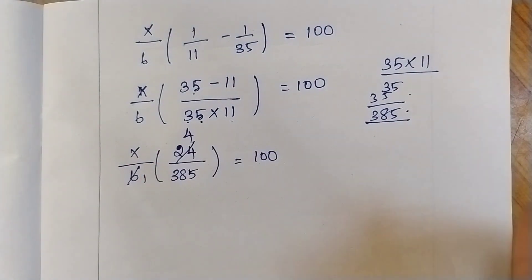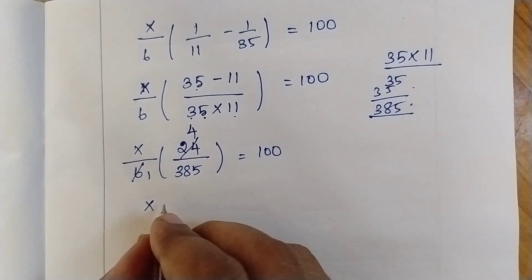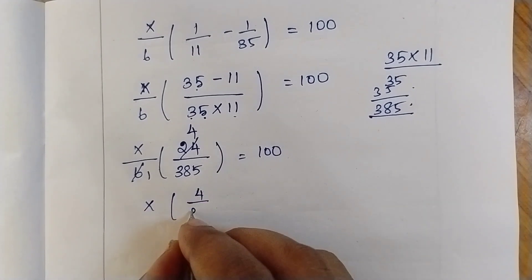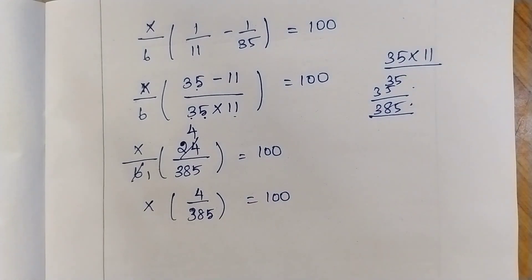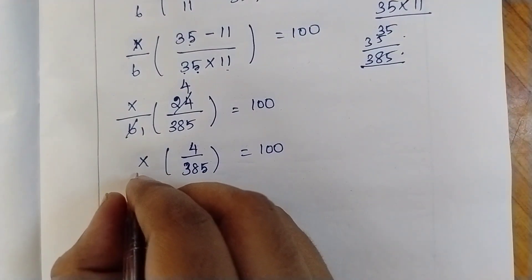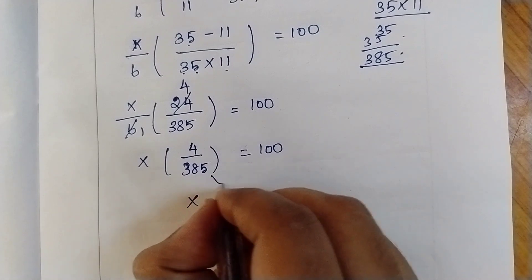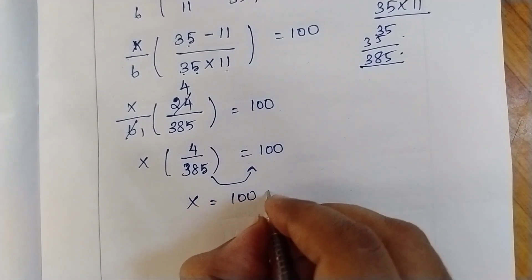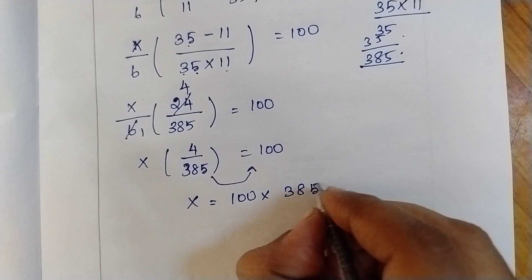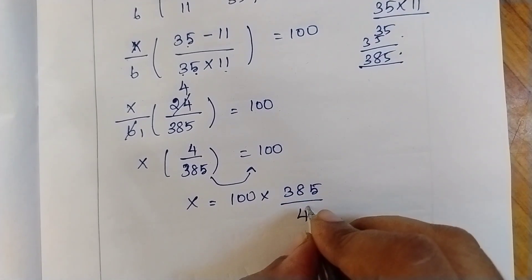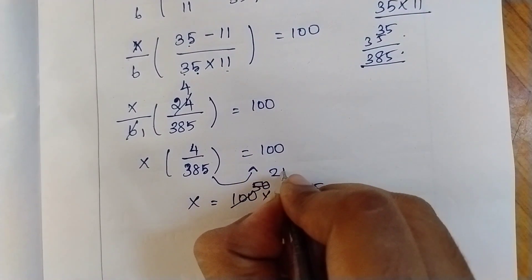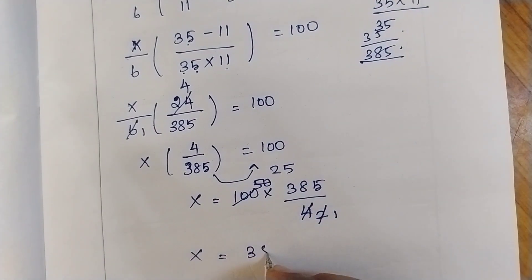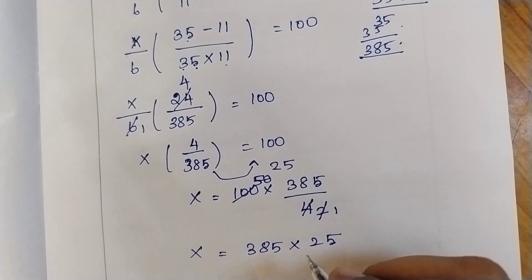6 and 24 simplify — 4 sixes are 24. So therefore x × 4/385 = 100. We need to find the x value. Now shifting to the right-hand side: x = 100 × 385/4. Dividing: 100/4 gives 25, so x = 385 × 25.